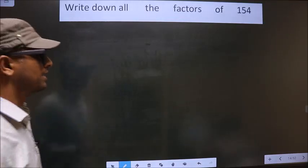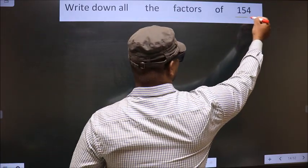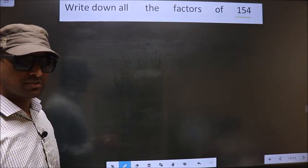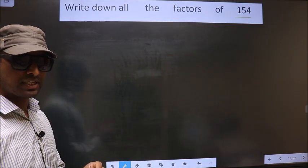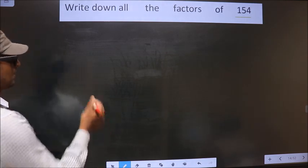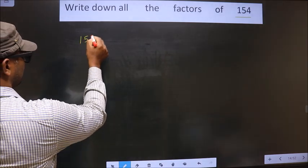Write down all the factors of 154. To write all the factors of 154, first we should do the prime factorization of it. So let us do. That is 154.